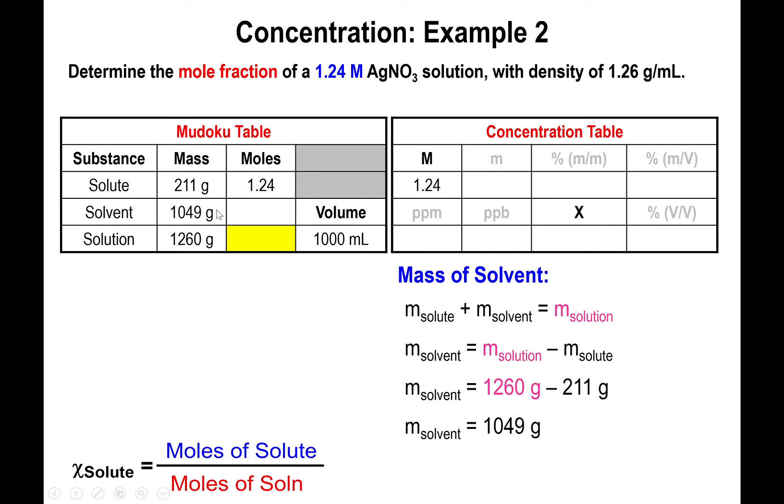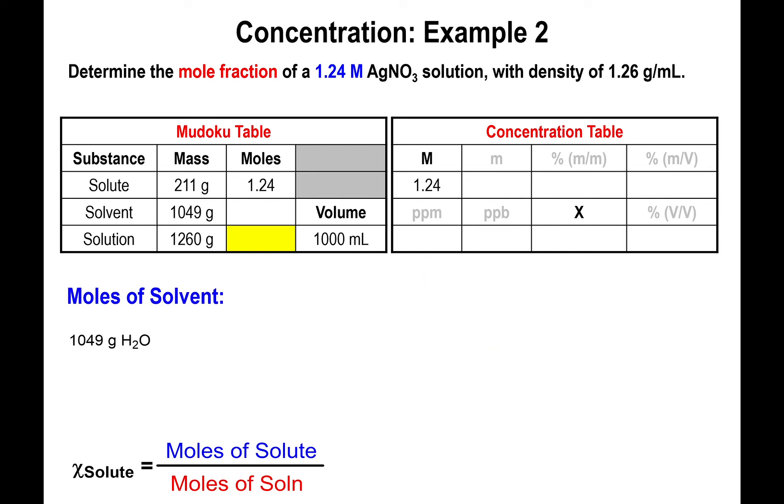Now nothing has been said about the solvent—we haven't been explicitly told what it is. So it's safe to assume the solvent is water. With that premise, we start with 1049 grams of water solvent and switch to moles, simply by dividing the mass of water by the molar mass of water, 18.02 grams per mole. This gives us the moles of water, 58.21 moles. So we input that into the table.